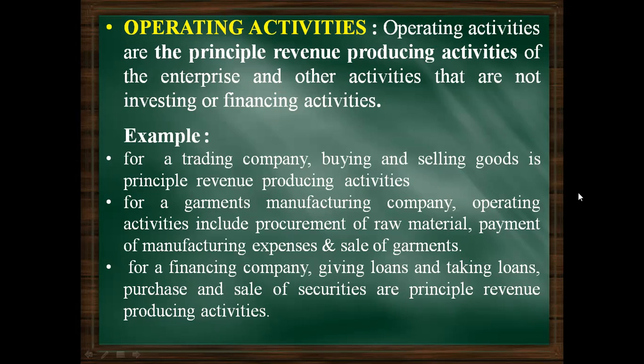For a trading company, taking a loan is not a principal revenue-producing activity — it is not their main business. But for a financing company, giving and taking loans is the main business, so it is a principal revenue-producing activity. Principal revenue-producing activity means the main business activity from which the business earns revenue.